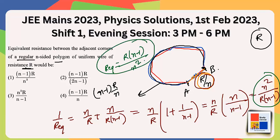So the answer is option number 1: R(n-1)/n².